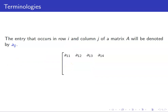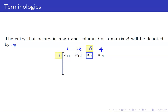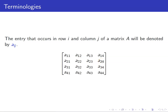For example, I have here a matrix having four columns. The entries in the first row will be denoted by A11, A12, A13, and A14. Similarly, the entries in the second row will be denoted by A21, A22, A23, A24, and so on.